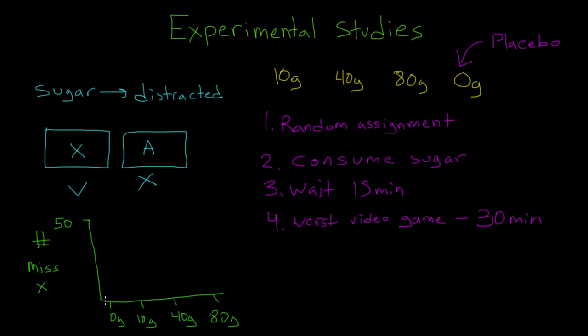So let's say children who consume zero grams of sugar, let's say they missed maybe about 20 of the x's. And I apologize that I'm apparently incapable of drawing straight lines. And then maybe our 10 gram group would have missed a few more x's, though not a ton. And then maybe they missed 25.